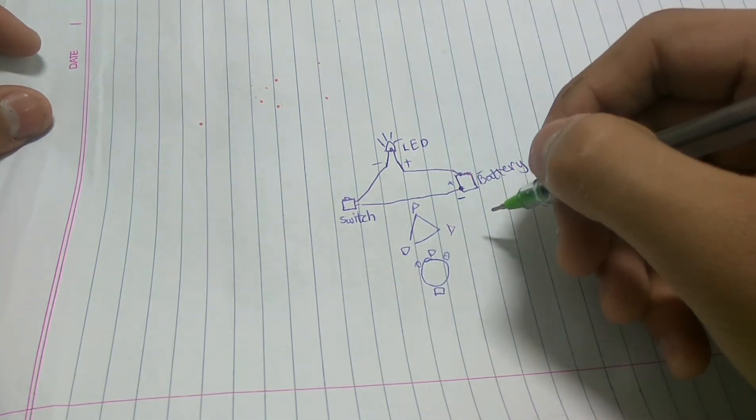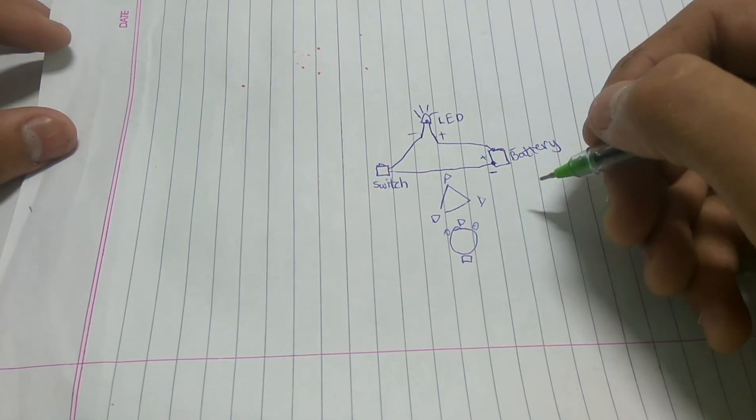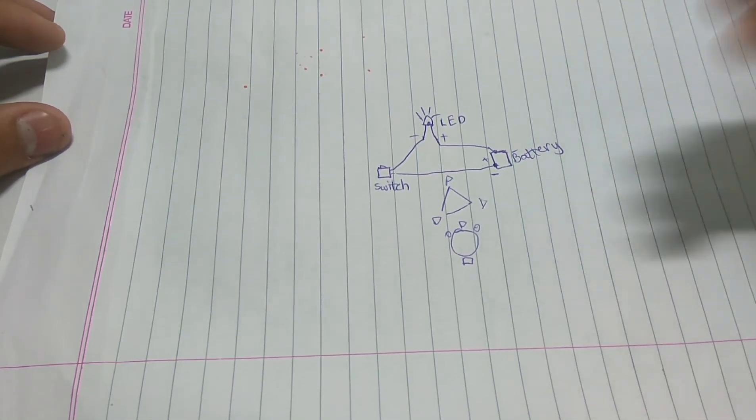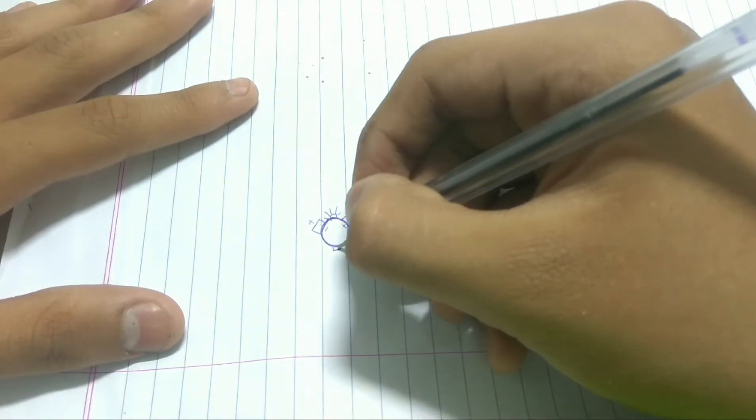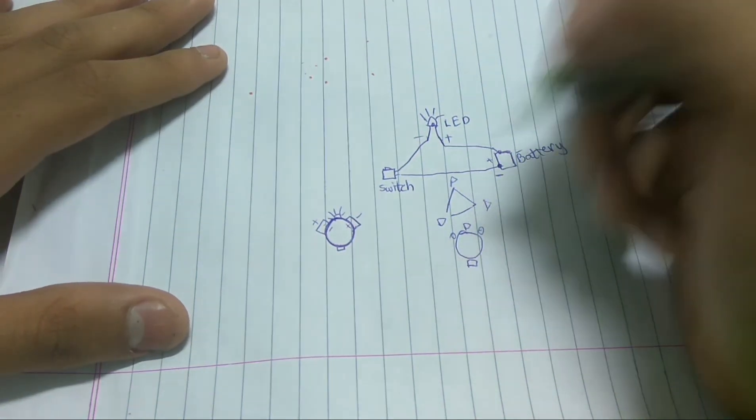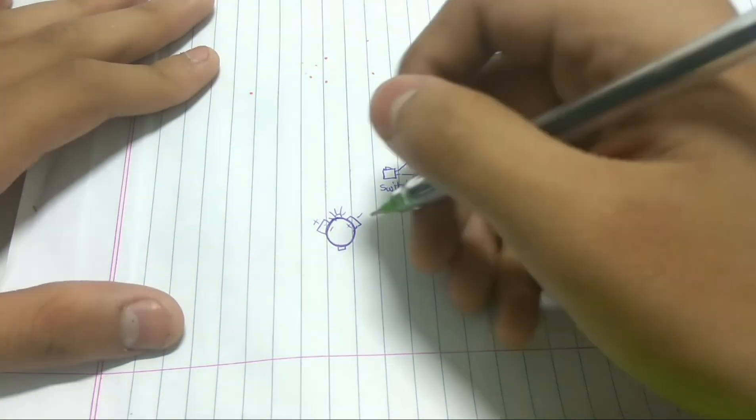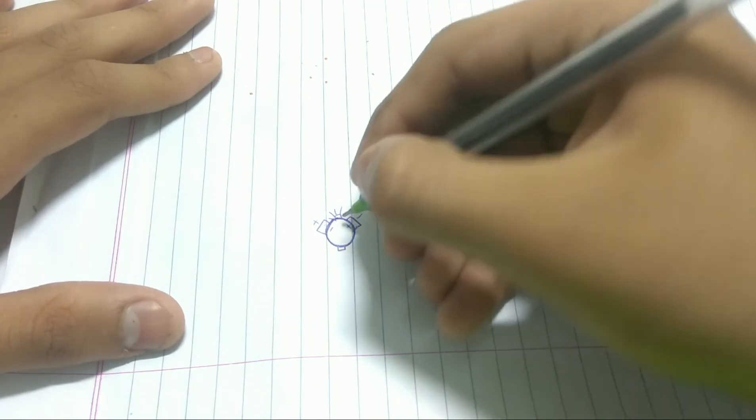Let me show you how we will do the circuit diagram. Here is the battery, here is the battery, switch, and LED. I know I'm bad at drawing, but hope you will understand.